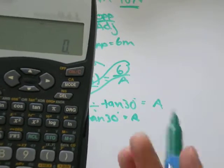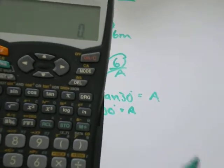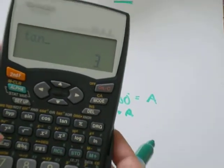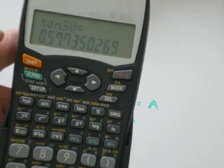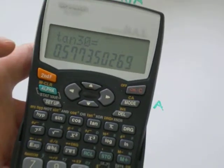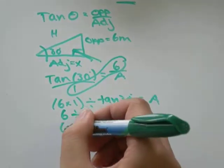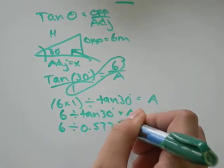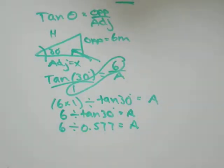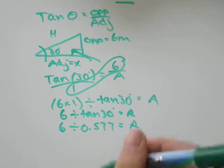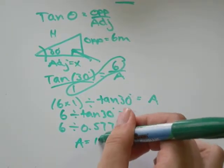We'll go on our calculator. Make sure your calculator is in degree mode. We'll go tan of 30 and I get that's equal to the decimal 0.577. So, 6 divided by 0.577 equals the length of the adjacent side. And I get that adjacent is equal to about 10.4.